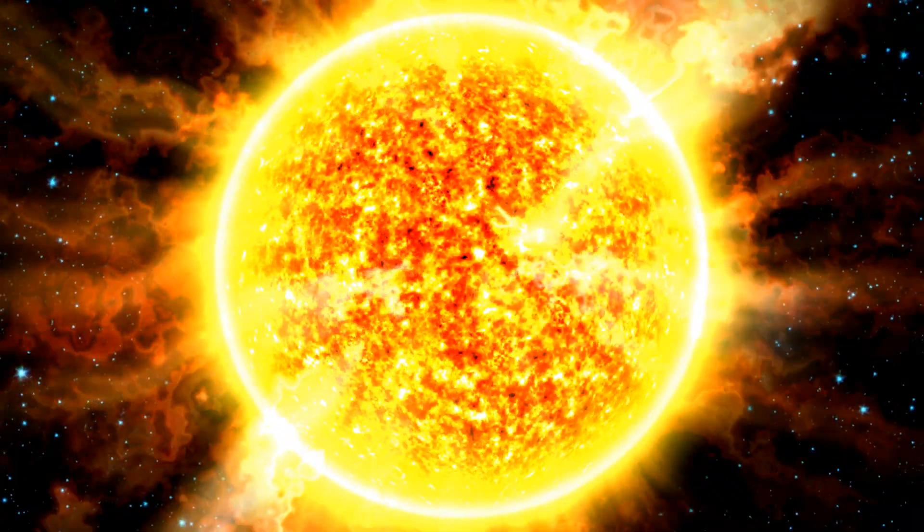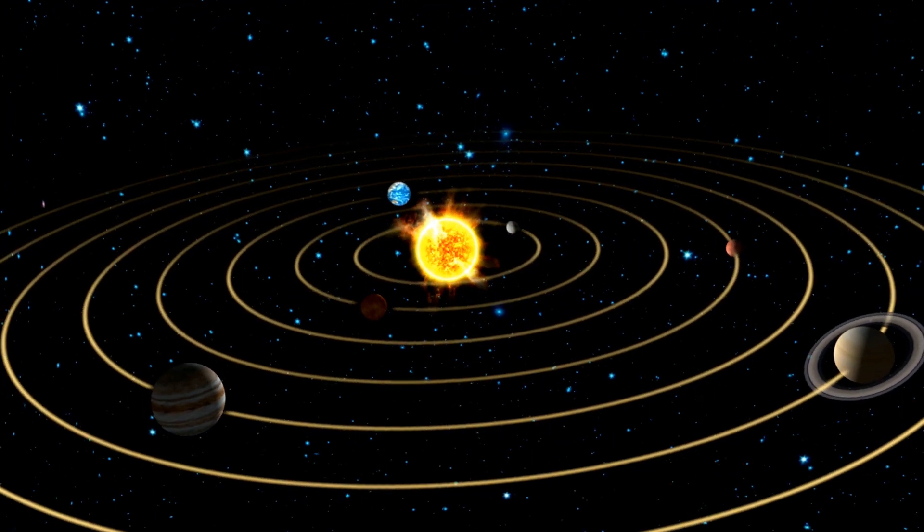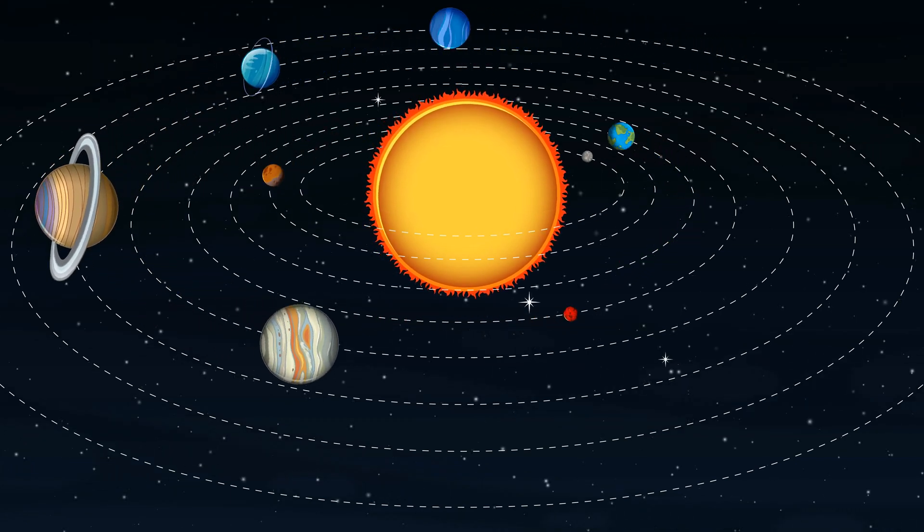As the cosmic dance unfolds, our solar system faces a dramatic transformation. The colossal gravitational forces at play between the Milky Way and Andromeda could alter our solar system's trajectory, ushering in a new era of celestial conditions.